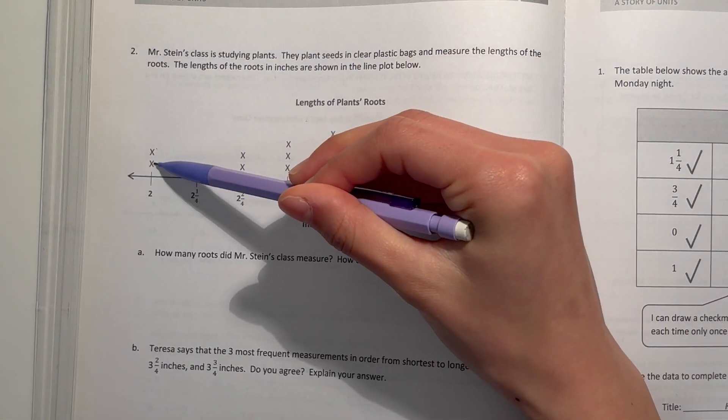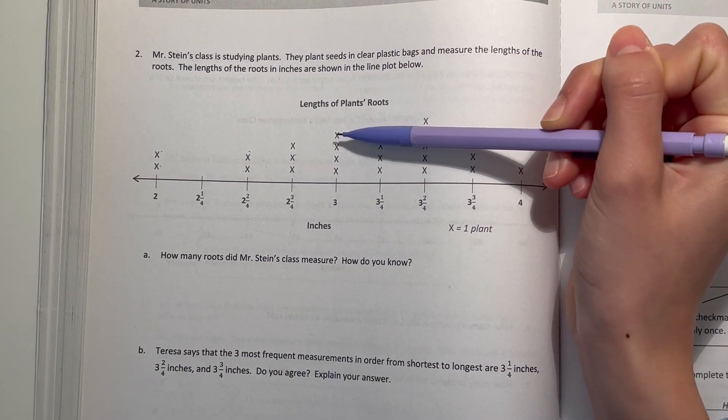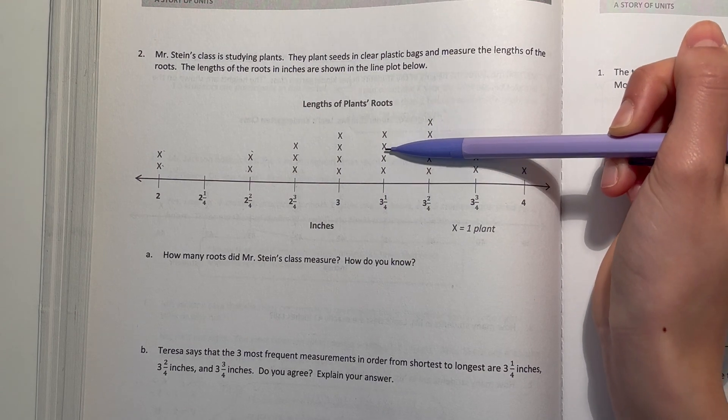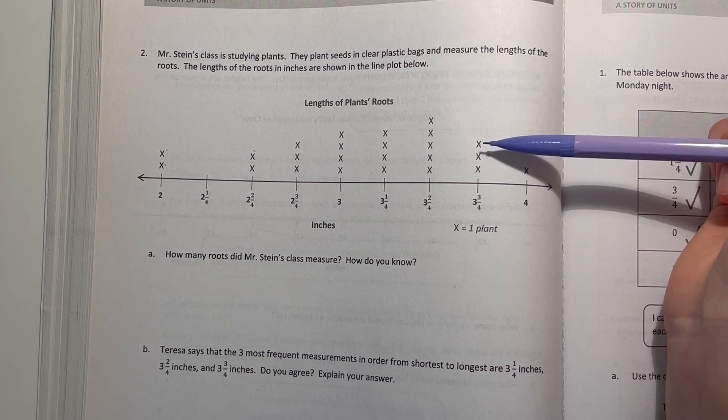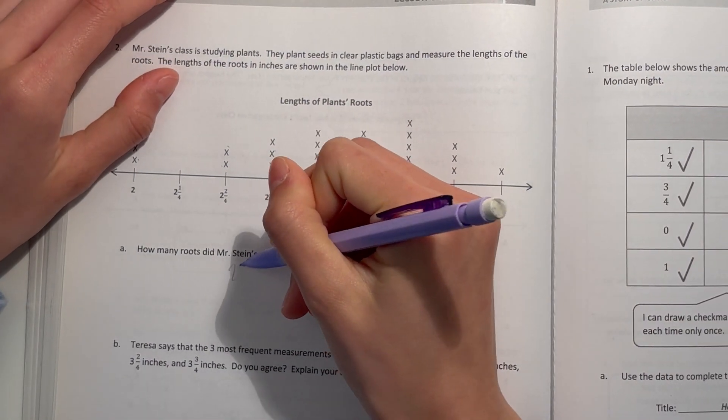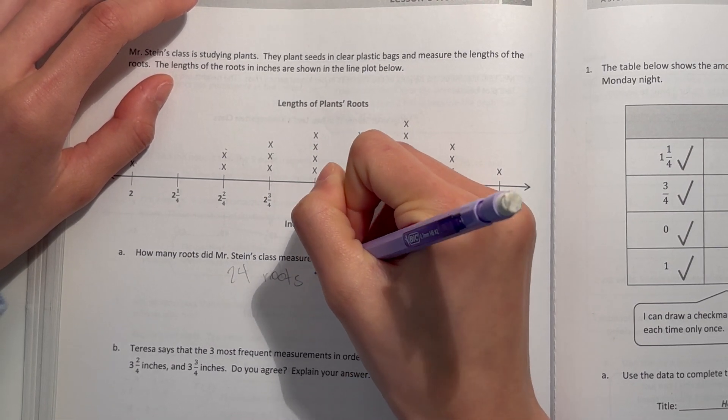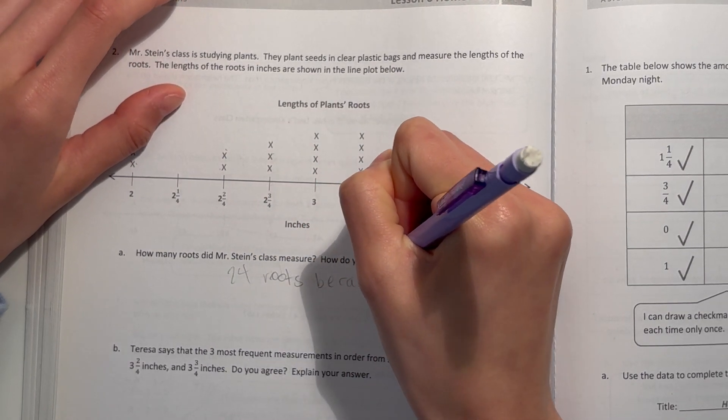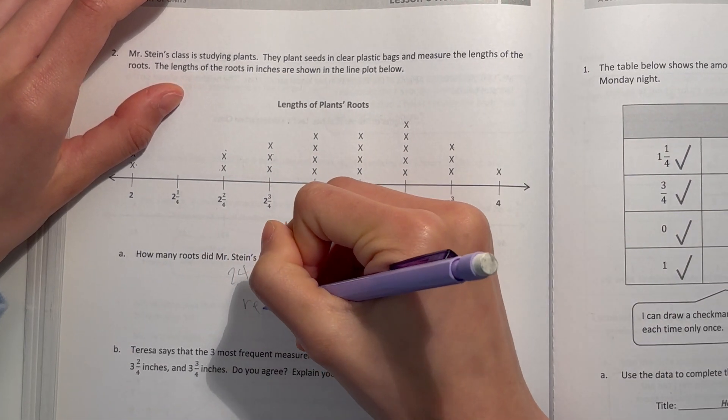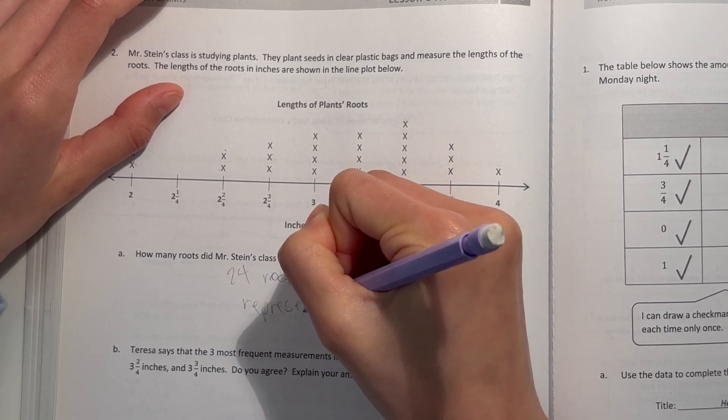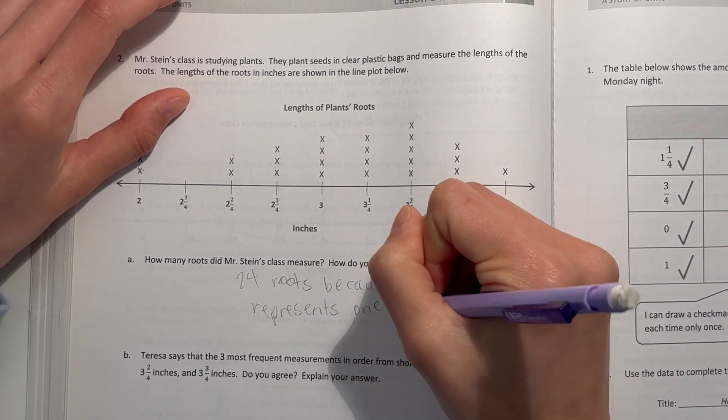So that's 1, 2, 3, 4, 5, 6, 7, 8, 9, 10, 11, 12, 13, 14, 15, 16, 17, 18, 19, 20, 21, 22, 23, 24. 24 roots because each x represents one plant.